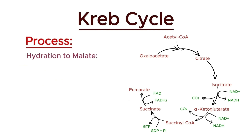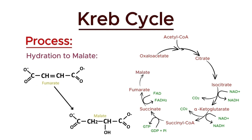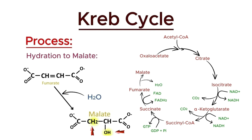In the seventh step of the Krebs cycle, fumarate is hydrated to form malate. This reaction is catalyzed by the enzyme fumarase. During this process, a water molecule is added to fumarate, converting it into malate. This step is essential as it prepares the substrate for the final oxidation reaction in the Krebs cycle.